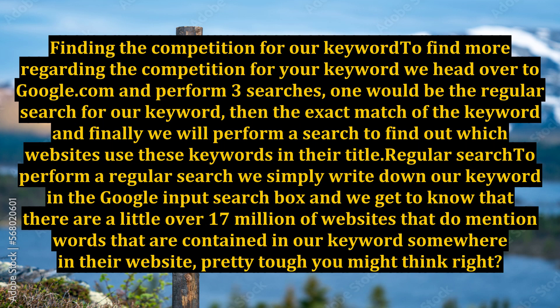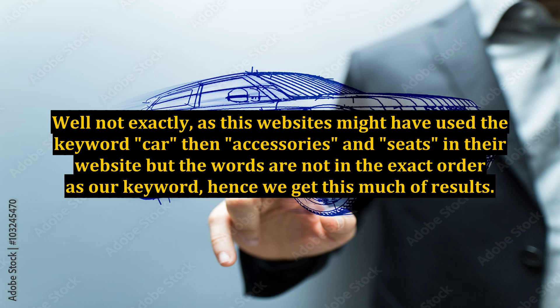To perform a regular search, we simply write down our keyword in the Google search box and we find that there are a little over 17 million websites that mention words contained in our keyword somewhere in their website. These websites may have used the words CAR, accessories, and seats, but the words are not in the exact order as our keyword — hence we get this many results.